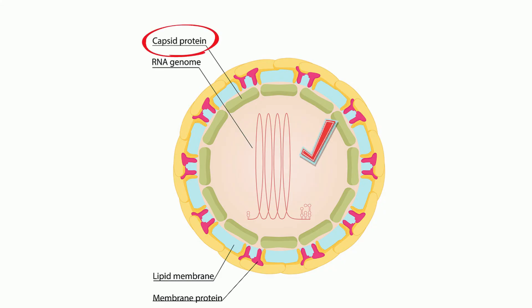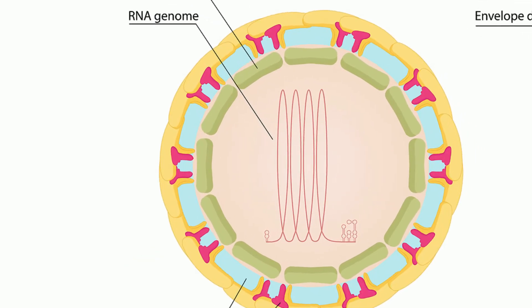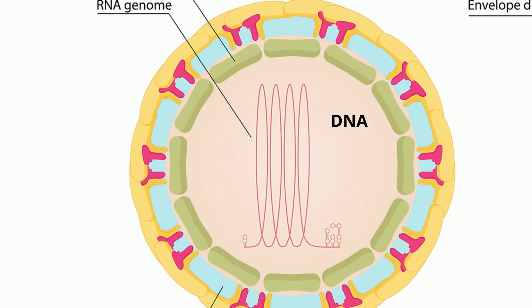A virus is basically genetic material encased by a protein layer called a capsid, and some viruses are surrounded by a lipid membrane. The genetic material can be DNA, RNA, or both.